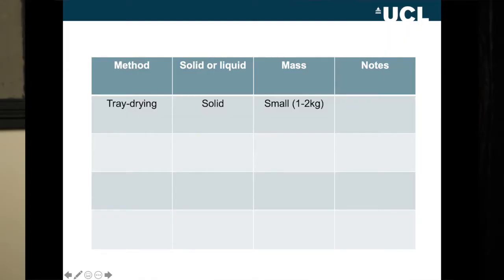Here is the summary table. Tray drying applies to a solid — you don't put a liquid onto a tray. And really it's a small mass of solid, maybe one to two kilos. So if an exam question says you need to dry a wet granulated material and you've only got one to two kilos, you would choose tray drying because it's a solid and it's a small mass.